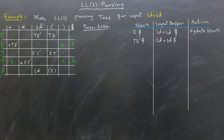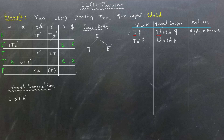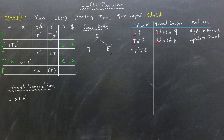At this point, we begin to build our parse tree and our leftmost derivation, starting with E deriving to T E'. Next, we examine the top of the stack, which now contains T, and compare it with the input buffer, which still has id. Since T is another non-terminal, we again refer to the parsing table. The table tells us that T → F T'. We update the stack by replacing T with F T' and continue updating our parse tree and leftmost derivation.